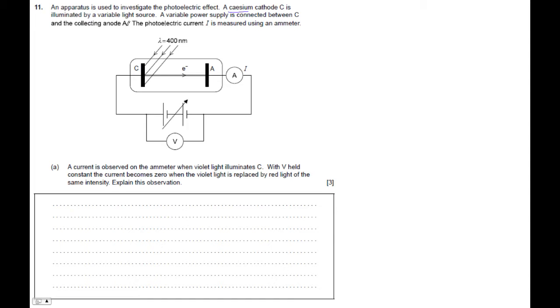A variable power supply is connected between C and the collecting anode, and the photoelectric current is measured by the ammeter here. This is our ammeter.